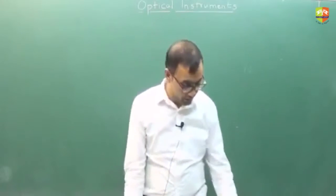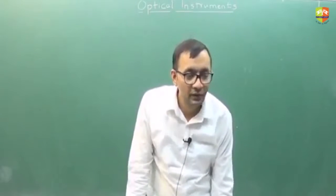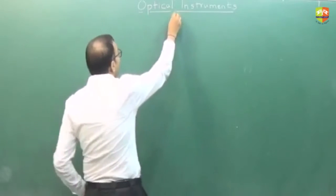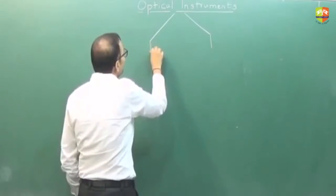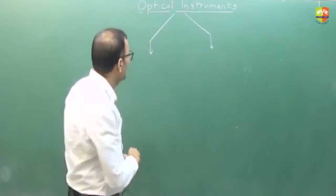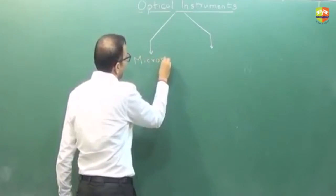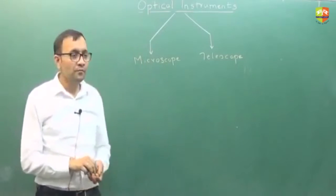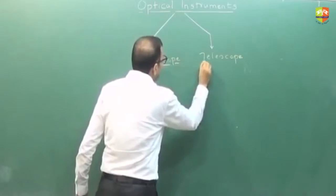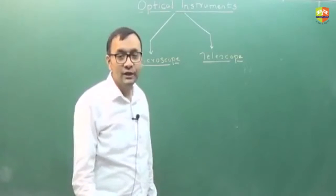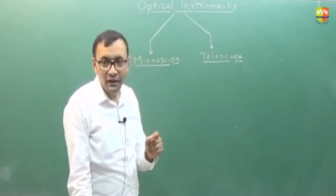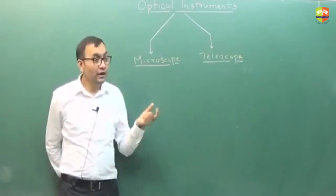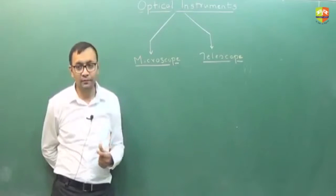When you first heard about optical instruments, what came to mind? Microscope and telescope. What does a microscope do? It magnifies. So you have two artificial optical instruments in your syllabus: microscope and telescope. A microscope lets you see objects that are very very small — our eyes are not capable of seeing very tiny objects, so the microscope magnifies them so you can see what is happening.